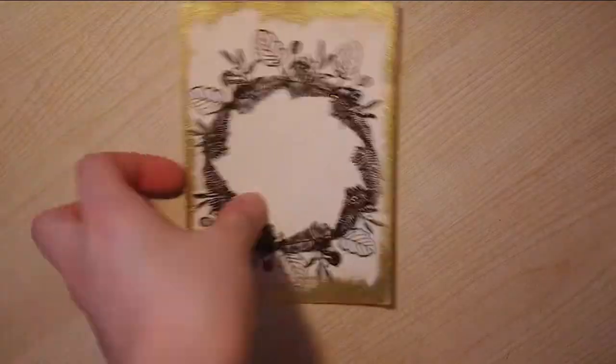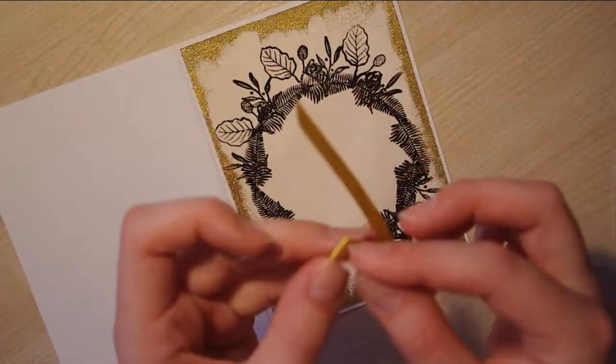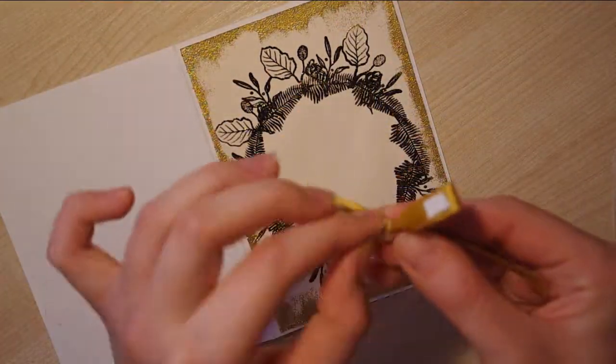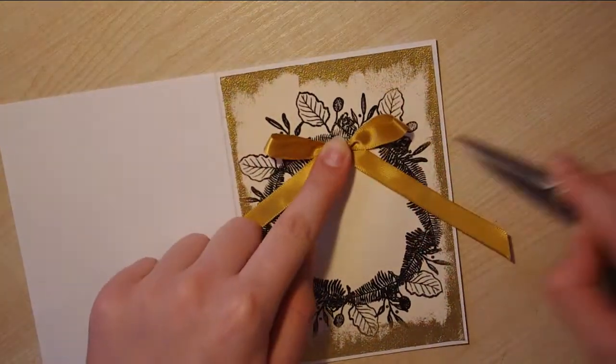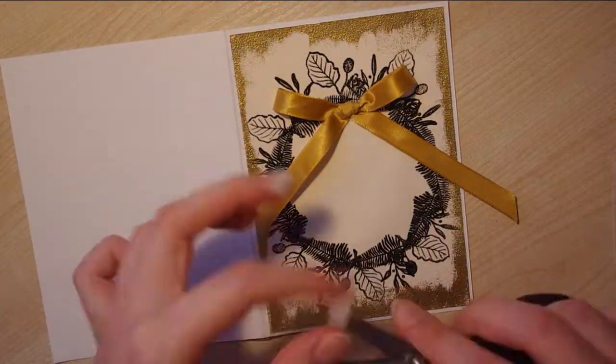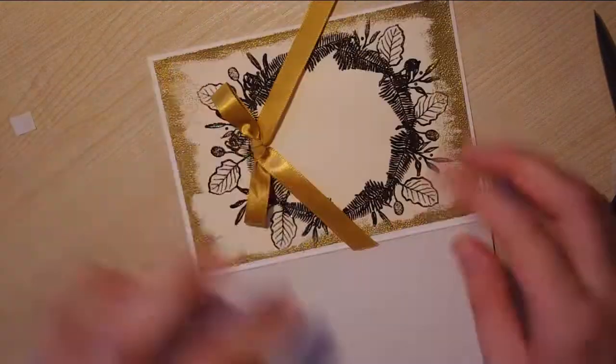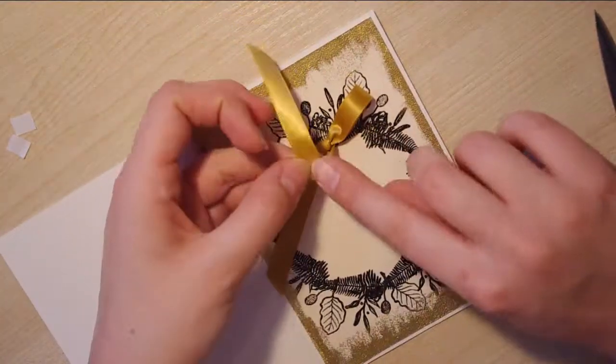Here I made a golden bow because I think that every Christmas wreath just needs a bow. I'm using double sided tape to add it on the card, and I'm also trimming the edges to make the ribbon more beautiful on the card.